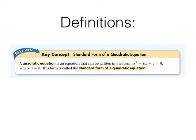Let's start with a quick review. A quadratic equation, remember, is one that can be written in standard form: ax squared plus bx plus c equals zero. We're not talking about a function — it's an equation. So if it was a function, this zero would be a y. Remember that a can't be zero, then there would be no x squared in our equation. This is our standard form of a quadratic equation.